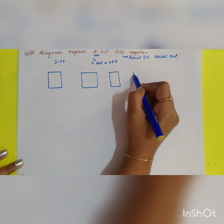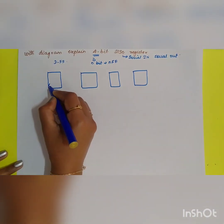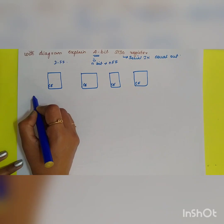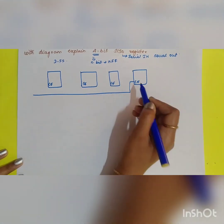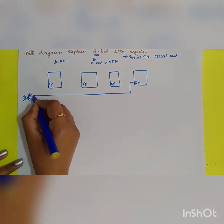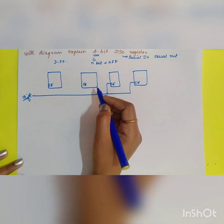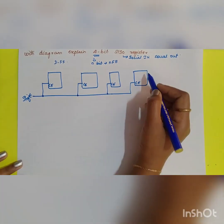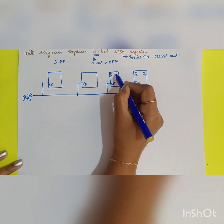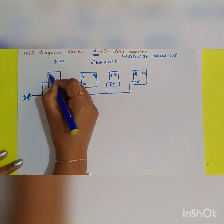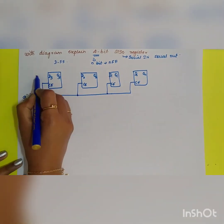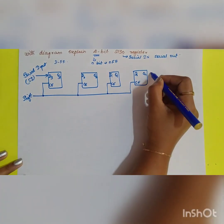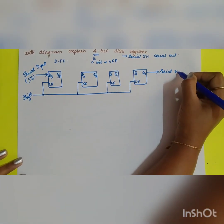Take 4 D flip-flops, each having a clock enable signal. The clock enable signal will be connected to a signal called 'shift'. Since it is a D flip-flop, you will have inputs D0, D1, D2, D3 and outputs Q0, Q1, Q2, Q3. The first input is your Serial In (SI) and the last output is your Serial Out.